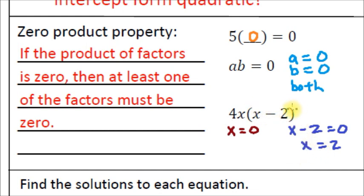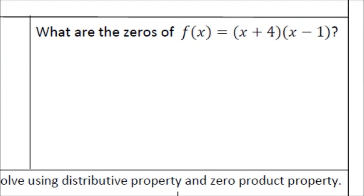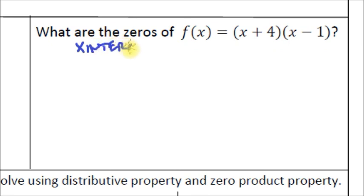These are examples of how to use the zero product property to find values of x that make an expression equal to zero. Now let's look at another example: what are the zeros of f(x) = (x + 4)(x − 1)? We're looking for the values of x that automatically change this equation to zero — those are the x-intercepts, where the graph crosses the x-axis.